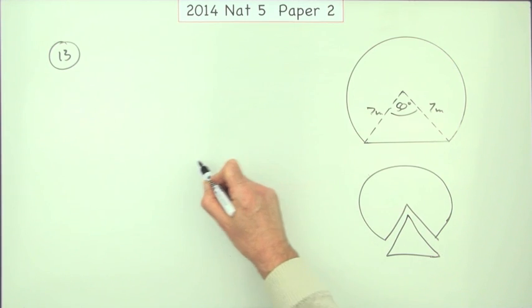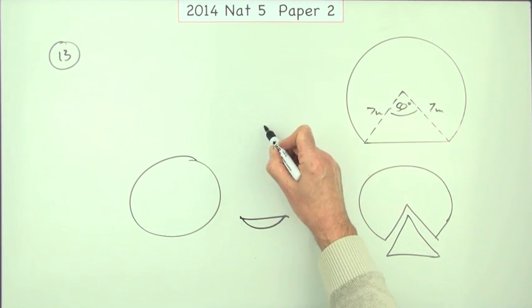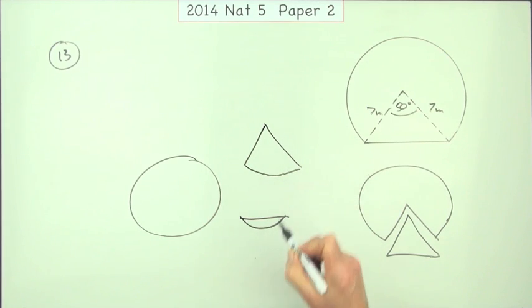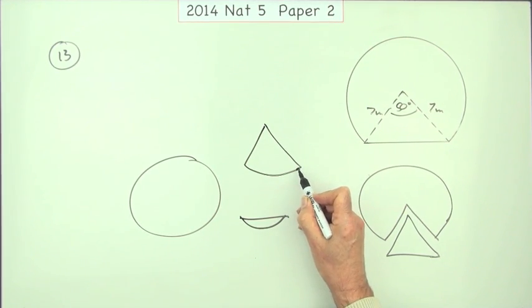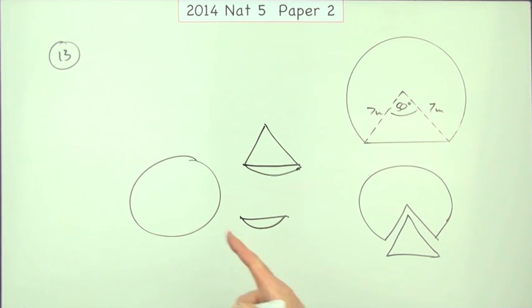Or you could think of it as a complete circle minus a segment, but then to find the area of that segment you'd have to take a minor sector and subtract this triangle from it. So there's less calculation here.